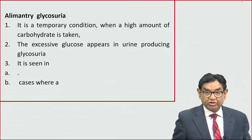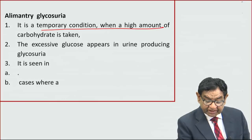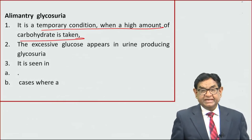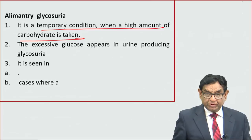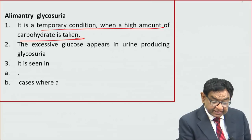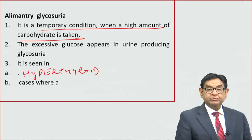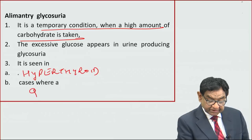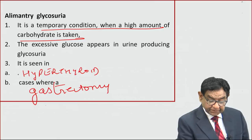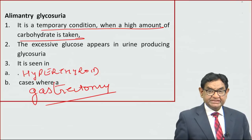Alimentary glycosuria is another cause of glycosuria without diabetes. It is a temporary condition where a high amount of carbohydrate is taken, leading to glycosuria. This is seen in conditions like hyperthyroidism and also after gastrectomy — where part of the stomach has been removed for any surgical reason.